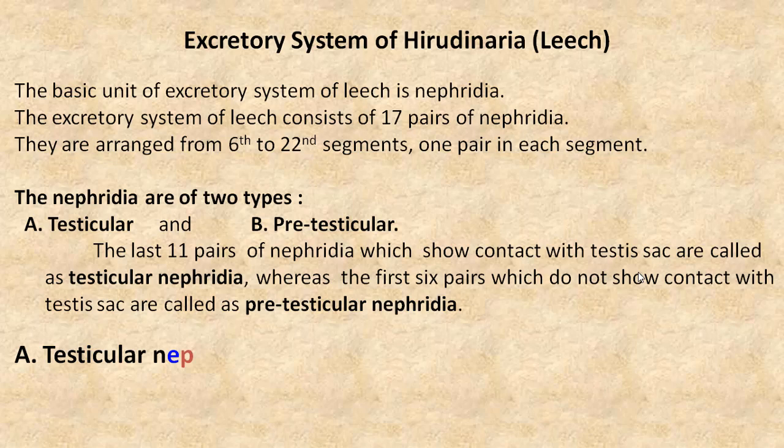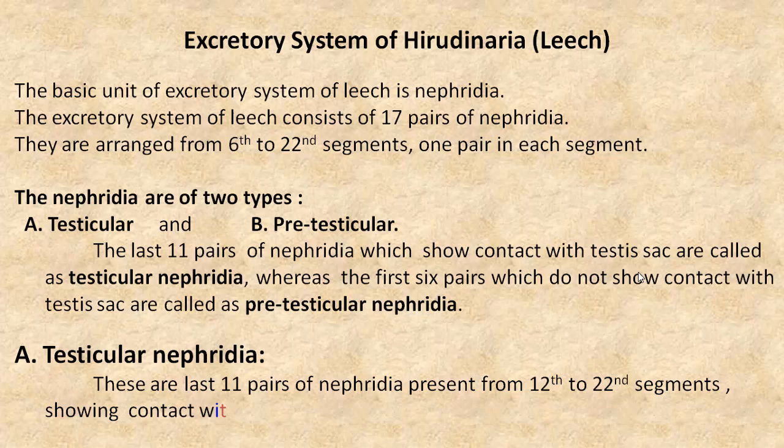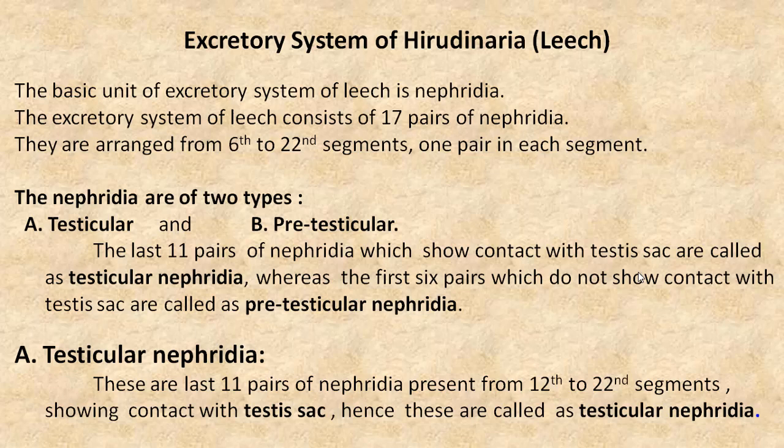First we will see testicular Nephridia. These are the last 11 pairs of Nephridia present from the 12th to 22nd segments, showing contact with the testis sac; hence these are called testicular Nephridia.